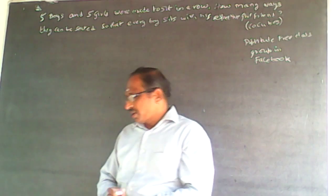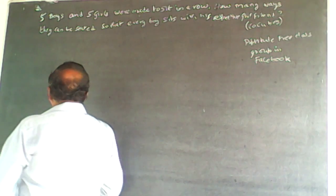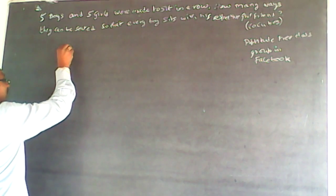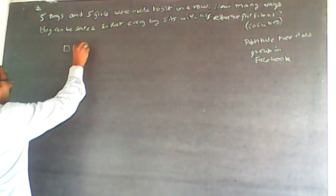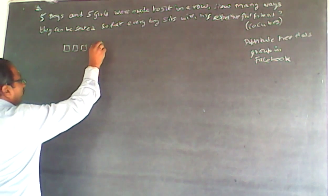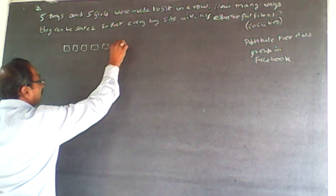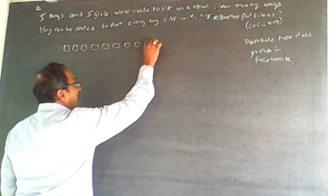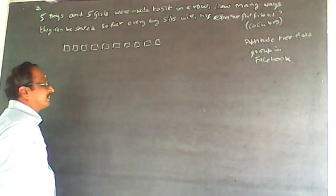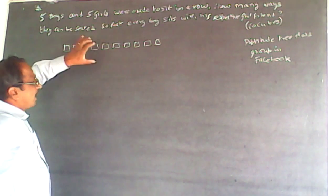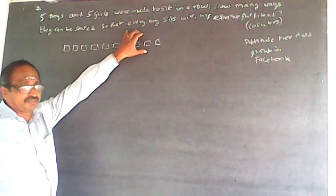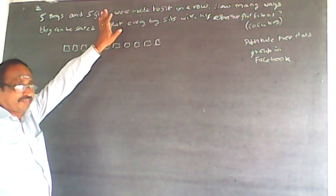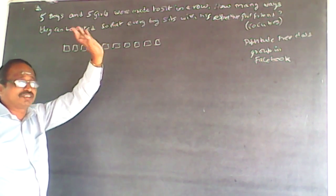So now what happens is, I will make ten boxes here. One, two, three, four, five, six, seven, eight, nine, and ten. Because five boys and five girls are there, I have drawn the same boxes here. Now there are five boys and five girls. Respective girlfriend has to sit close by.